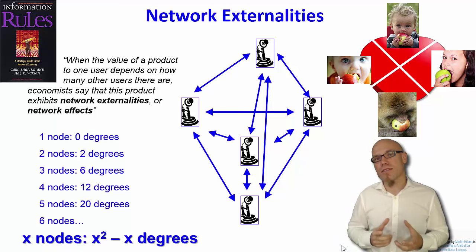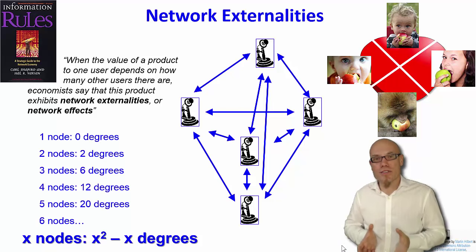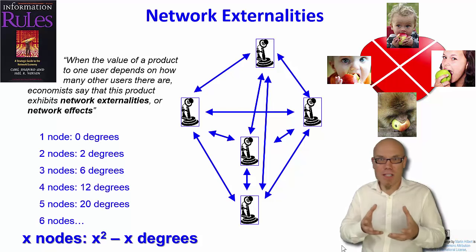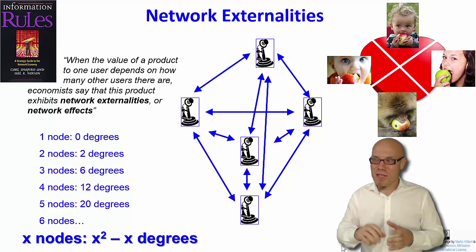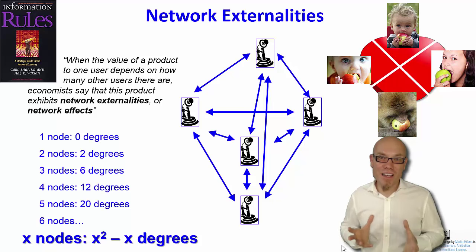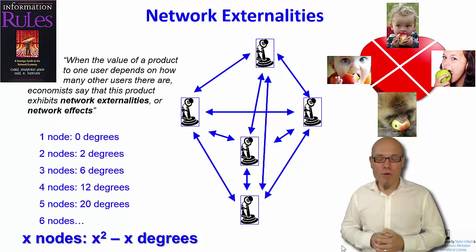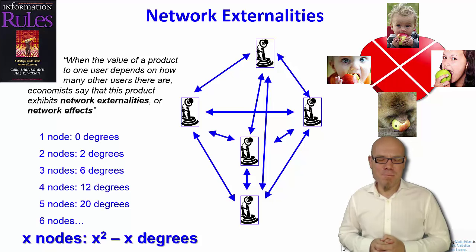That's why some social networks are so much more valuable than others — not because they have much better software, but simply because of the number of people. Just a few more people means exponentially more possibilities and exponentially more value. That's the importance of network externalities.